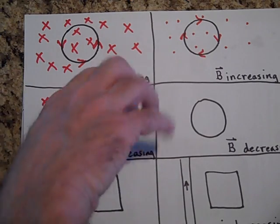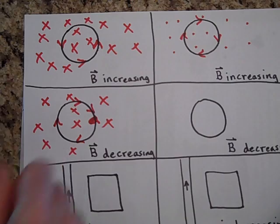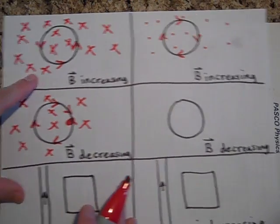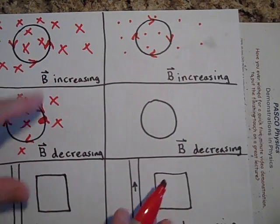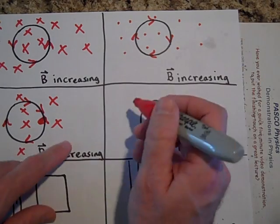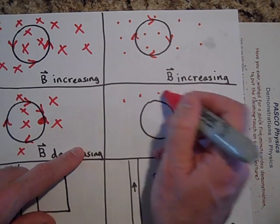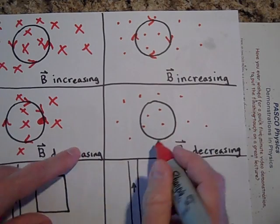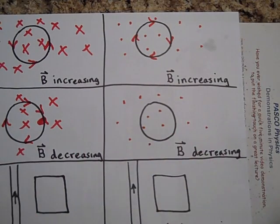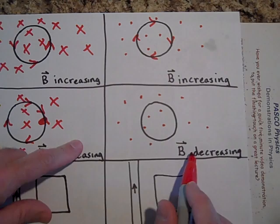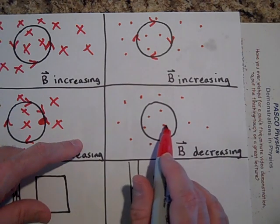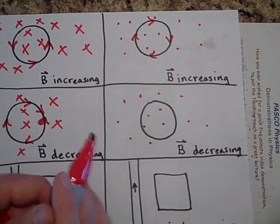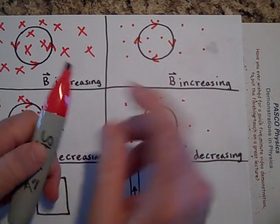Now why does it want to make x's? Because these x's are disappearing. Now let's put some dots in here — that means the field is coming toward us. The B is decreasing, so it's going to try to make its own field coming out, and to make a field coming out it's going to go this way.